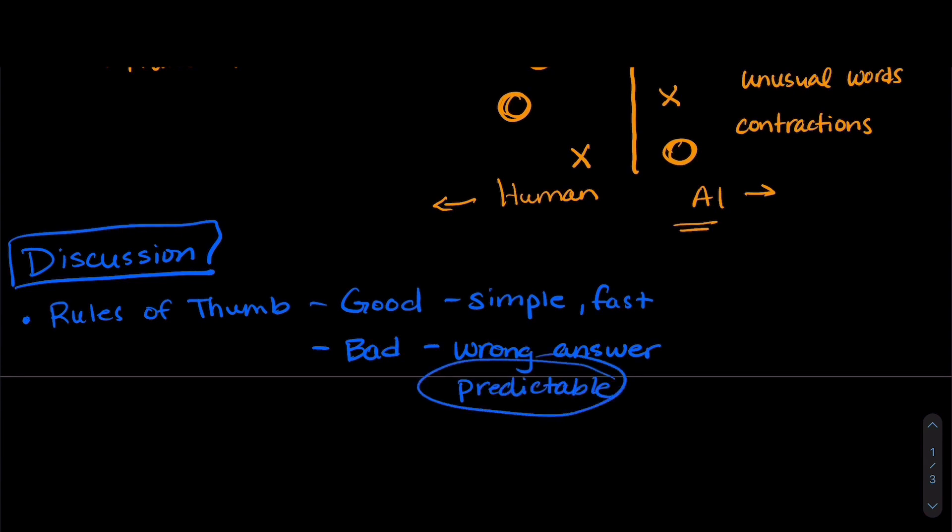Now, the problem with being predictable is that they can be dangerous because that means that phishing scams, scams trying to get your data, are going to be more believable, which is a problem.